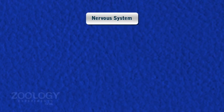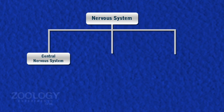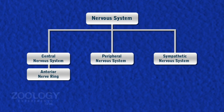The nervous system is well developed and concentrated. It consists of three parts: the Central Nervous System, the Peripheral Nervous System, and the Sympathetic Nervous System. The Central Nervous System consists of a Nerve Ring and a Ventral Nerve Cord.